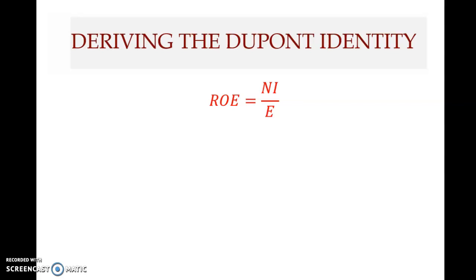Welcome to the next clip on chapter three. So far in chapter three, we have completed three key concepts: first, deriving the statement of cash flows; second, looking at the various standardization methods of financial statements; and third, ratio analysis. Now we move on to the fourth key concept, which is the DuPont analysis.